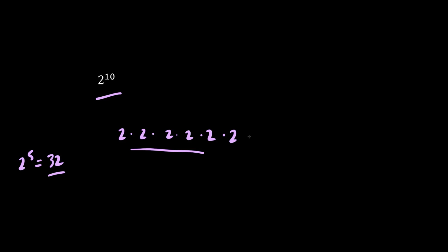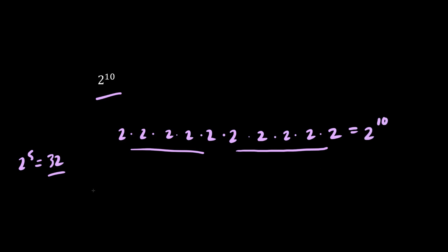Next we get 64, 128, 256, 512, and 1024. We have another five 2s, which is 2 to the 10, which we memorize to be 1024.